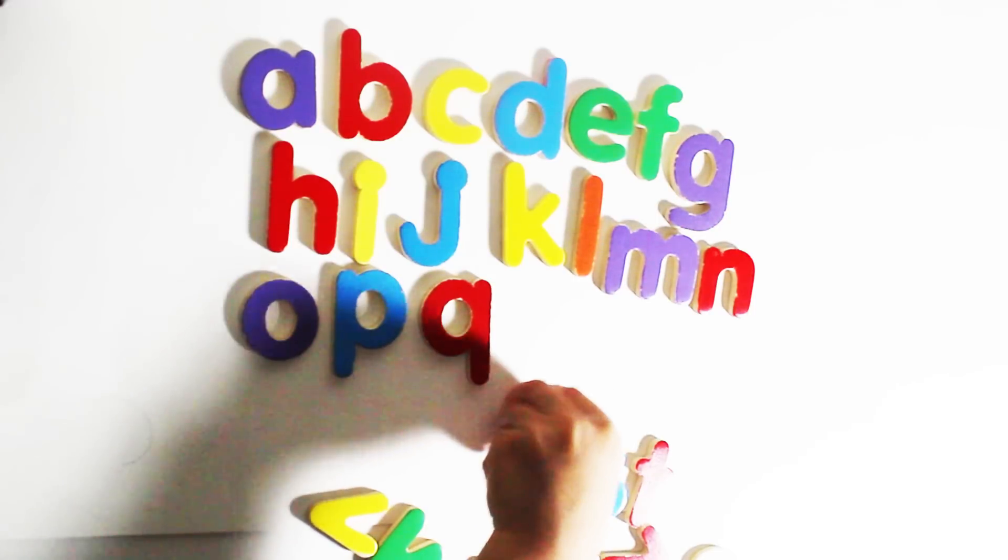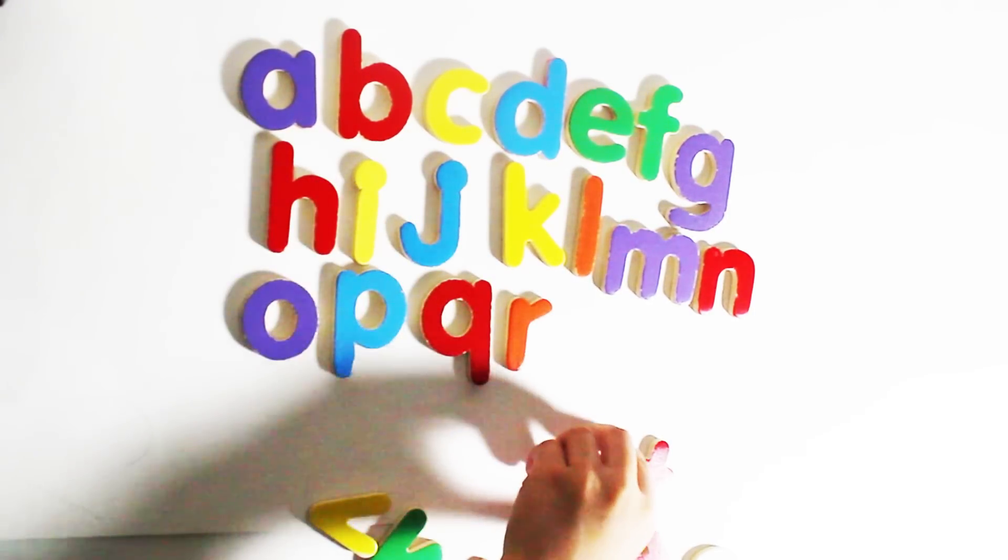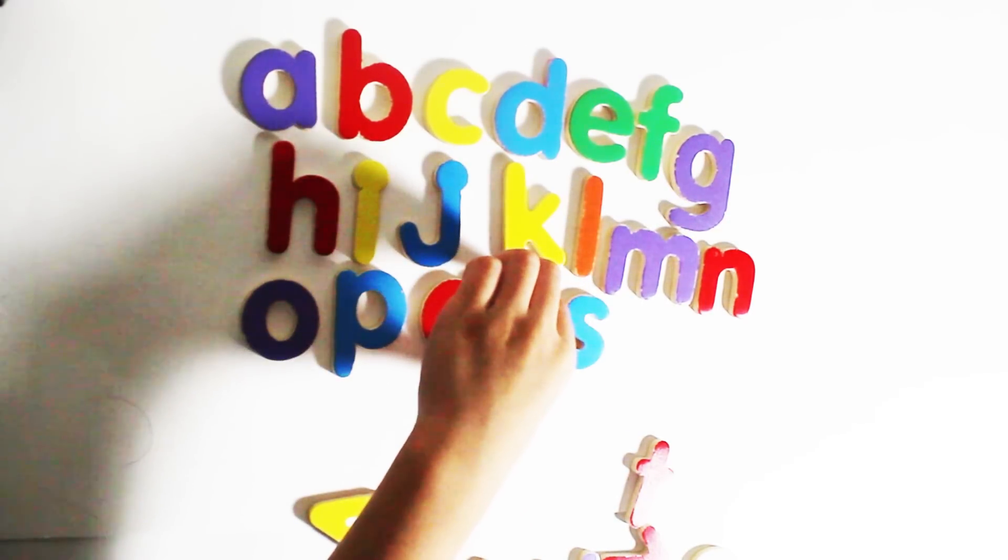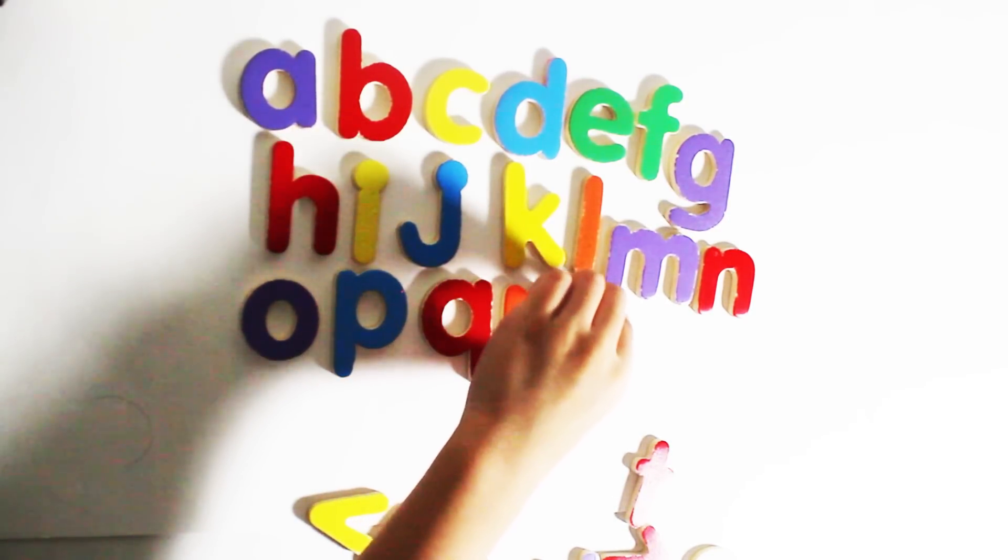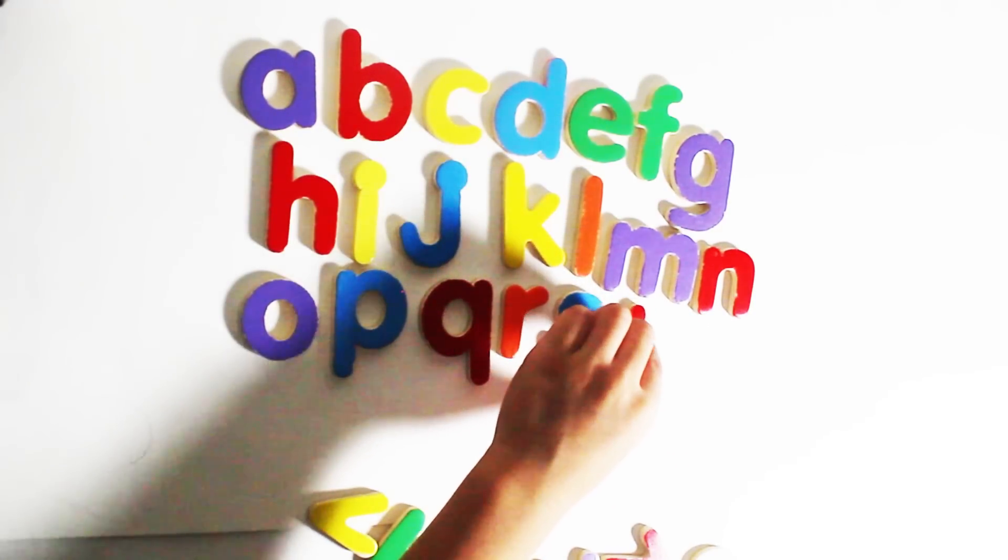R is for Rainbow, S is for Sun, T for Trains.